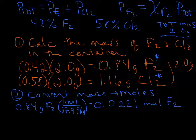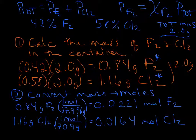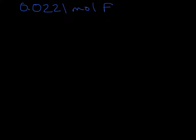Now the same for chlorine: we take 1.16 grams of chlorine gas. A mole of chlorine atoms is 35.453 grams, but since this is diatomic chlorine gas we multiply by 2, giving 70.9 grams per mole. Dividing, we end up with 0.0164 moles of chlorine gas. We are almost to that mole fraction.